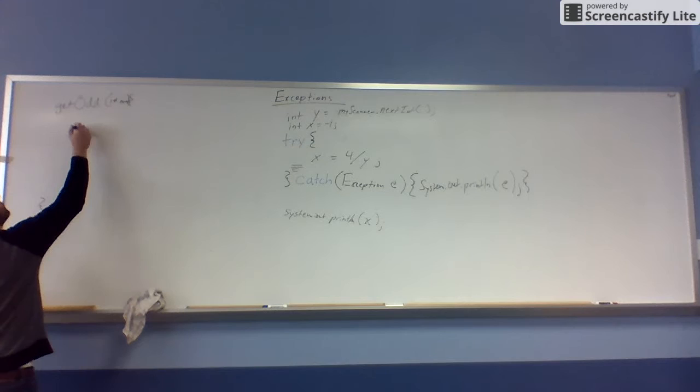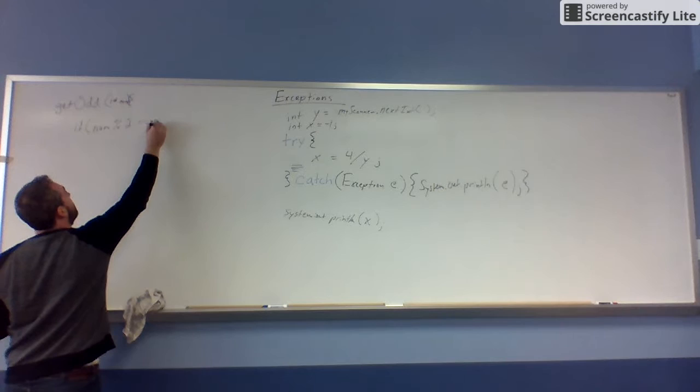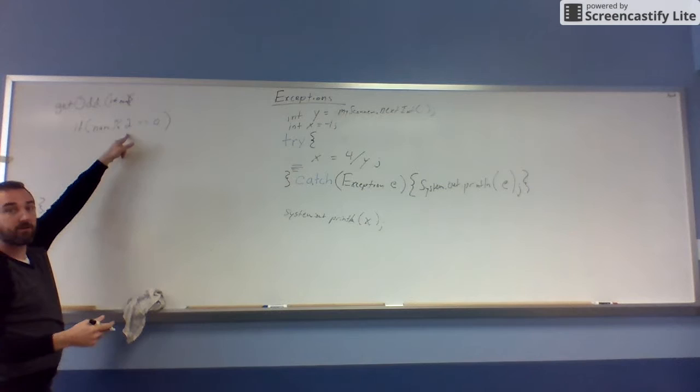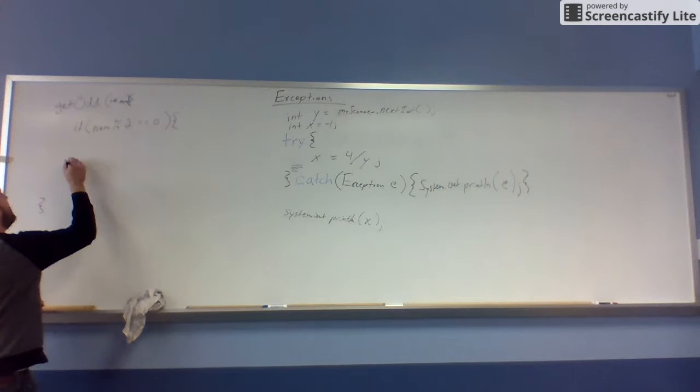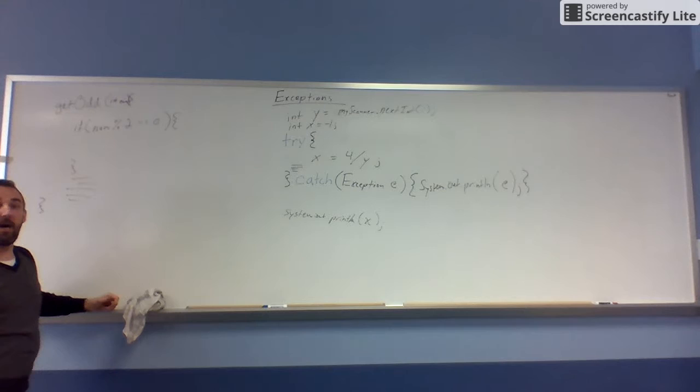So we might say, well, if num modulus two, so if the remainder of dividing by two equals zero, well, that means it's even, right? If I divide the number by two and there's no remainder, that means it's an even number. So if they gave me an even number, well, I can't do all this stuff down here. I wanted to do with an odd number. That's a problem. So at this point, I might just say, you know what, abandon ship. Don't bother anymore. There's no reason to continue.